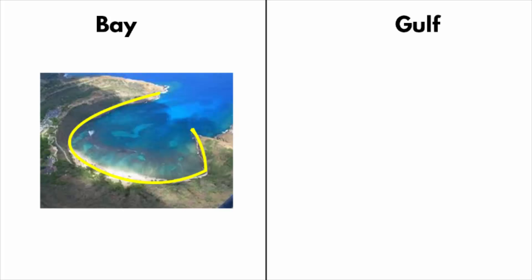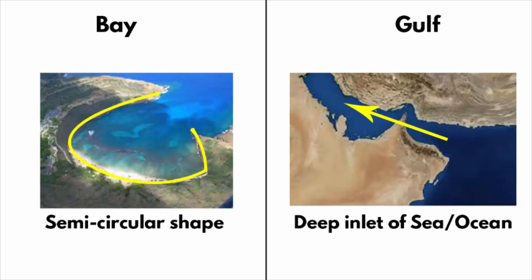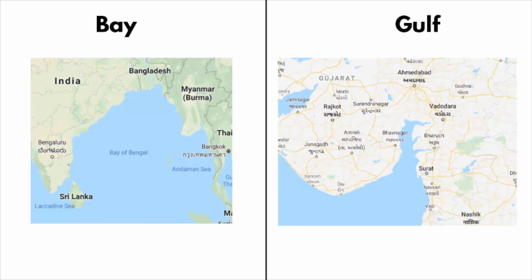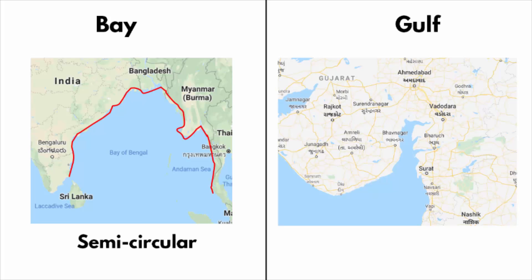The only noticeable difference is that a bay is semicircular in shape whereas a gulf is a deep inlet. For example, have a look at the Bay of Bengal and the Gulf of Khambath. If you look at the landmass around the Bay of Bengal, it is semicircular in shape. On the other hand, if you look at the Gulf of Khambath, the sea or ocean water goes deep inside the landmass. That means a gulf has a deep inlet of the sea or ocean.